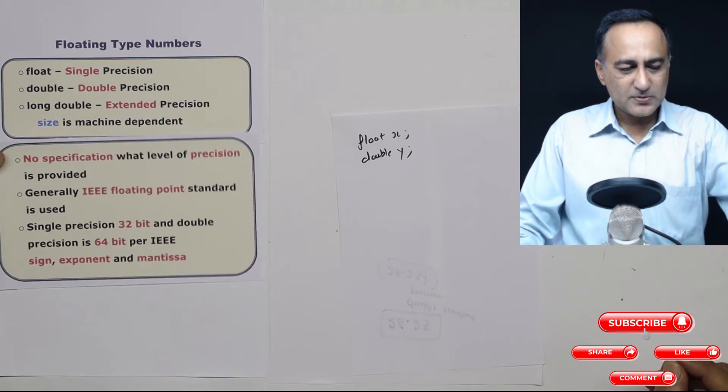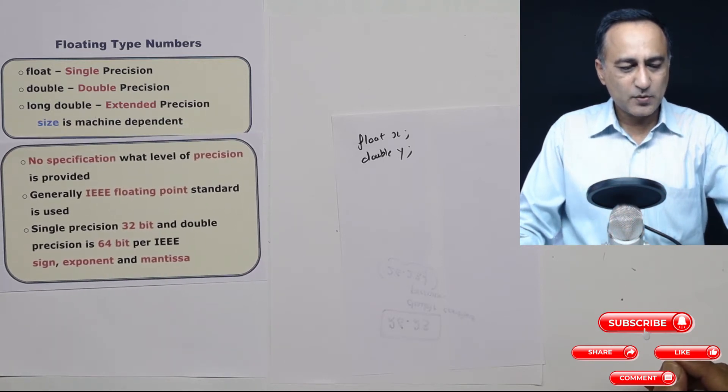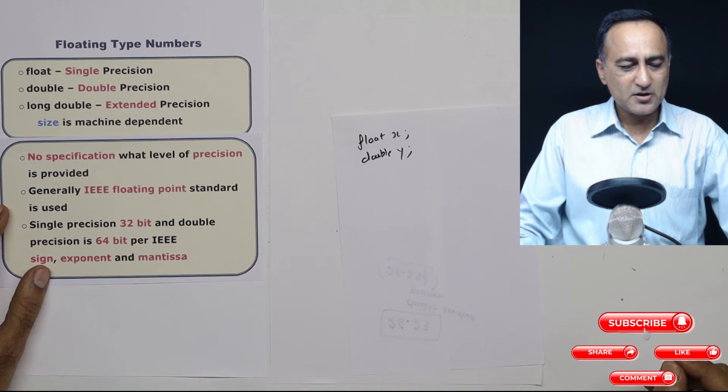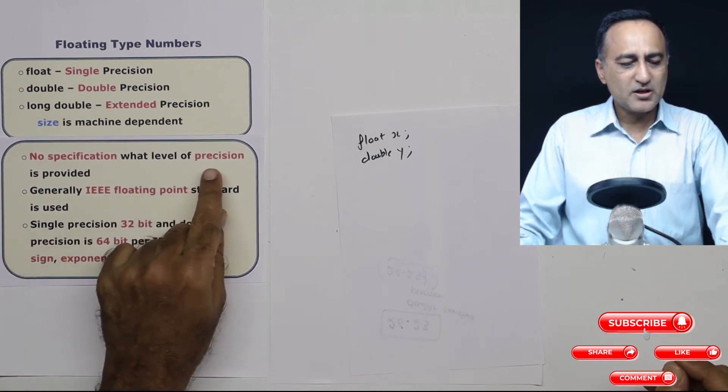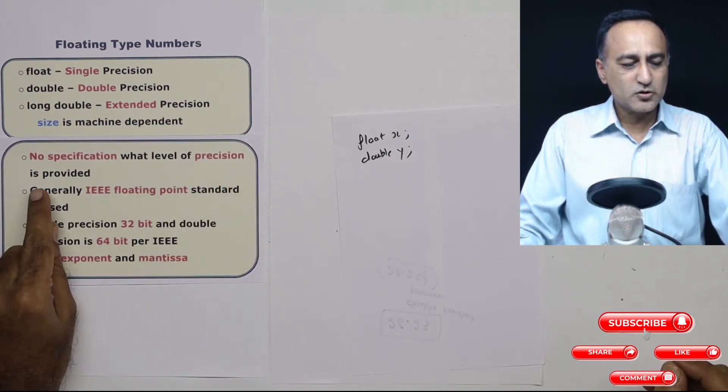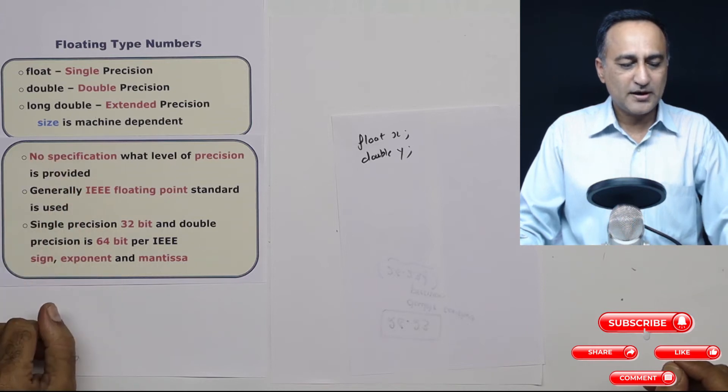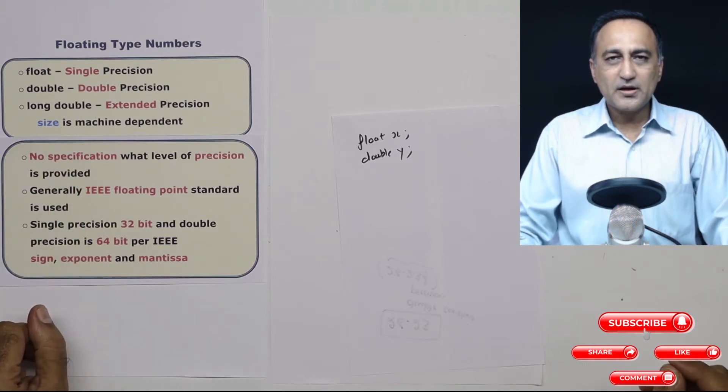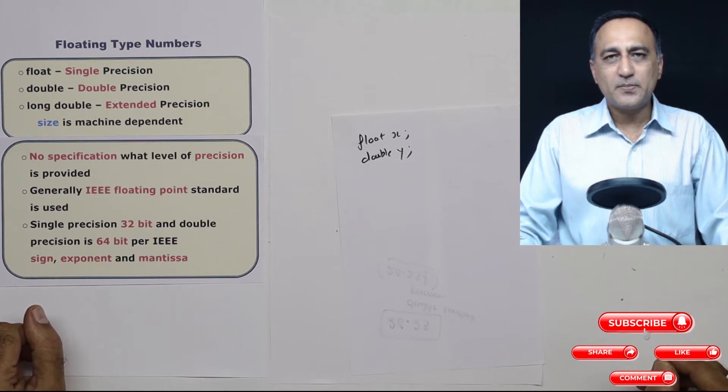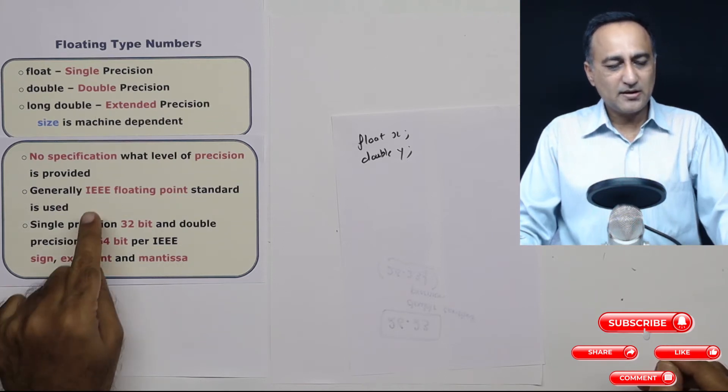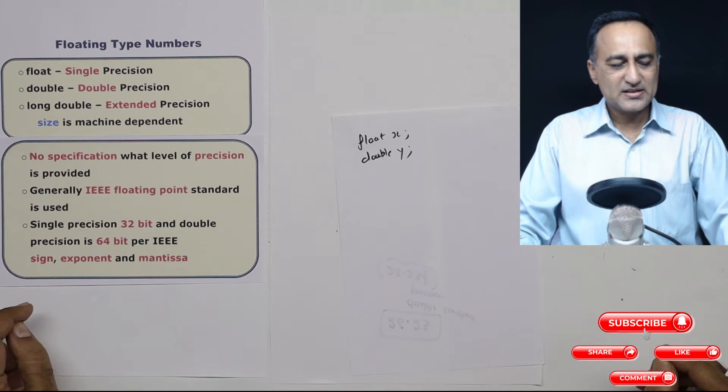So the specification of the C language does not make any mention as to what will be the number of precision or number of bits used to represent float or double. But the popular format which is generally followed to represent float and double is the IEEE floating point standard.